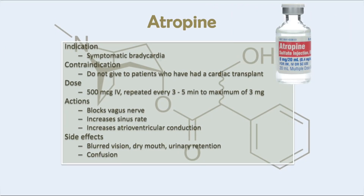Atropine is used for symptomatic bradycardia. Do not give it to patients with cardiac transplant, as the vagus nerve has been cut in those patients. The dose is 500 micrograms, repeated up to three milligrams. Its action is to block the vagus nerve, increase sinus rhythm, and increase AV conduction. Common side effects are anticholinergic: blurred vision, dry mouth, urinary retention, constipation, and confusion.